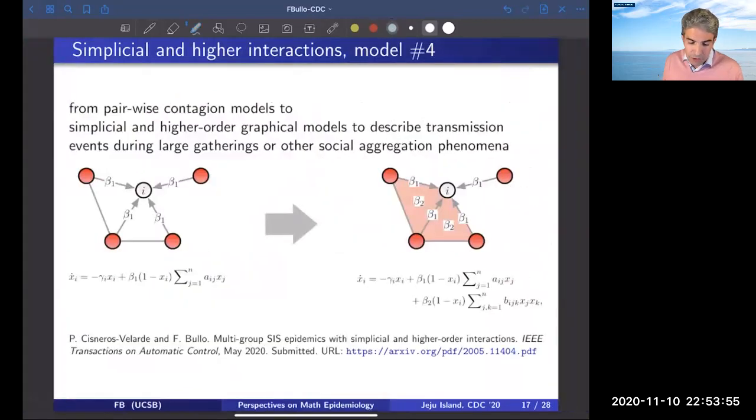It's also very interesting to think about models that are capable of capturing situations where there may be social aggregation, large gatherings, and groups of individuals that meet. These can be modeled using simplicial and high order interactions. Here there is a model in which you either imagine that I can be infected because of a pairwise interaction, or I can be infected also through the fact that it is meeting with more than one infected individual at once. There's wonderful theory, and I'll refer you to this reference available in the archive to review that.